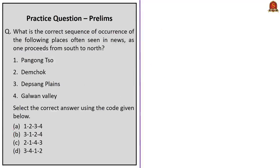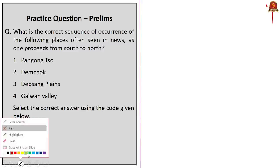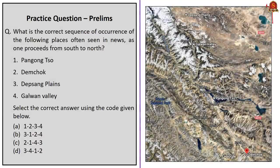What is the correct sequence of occurrence of places often seen in news as one proceeds from south to north? The places are the current dispute locations along the Line of Actual Control between India and China: Pangong Tso, Demchok, Depsang Plains, and Galwan Valley. Moving from south to north, Demchok comes first, then Pangong Tso, then Galwan Valley, and then Depsang Plains. The correct answer is option C: 2, 1, 4, 3.